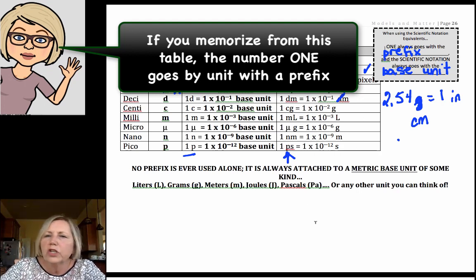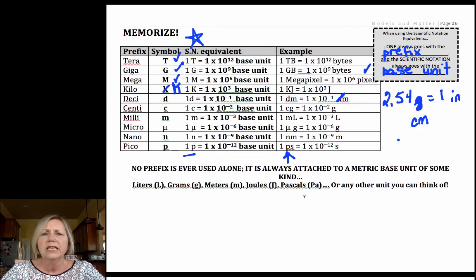So it doesn't matter. You're going to come across a bunch of base units: bytes, pixels, meters, joules, grams, pascals. It doesn't matter. The prefix means the same thing in terms of a conversion factor.